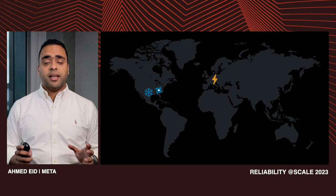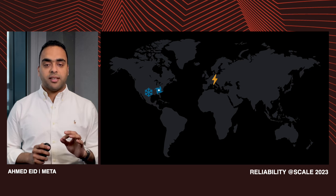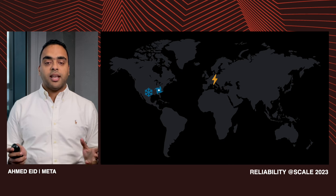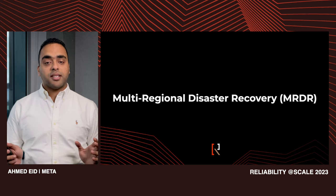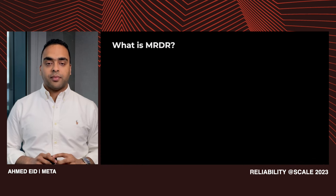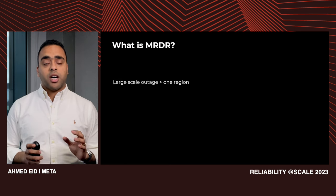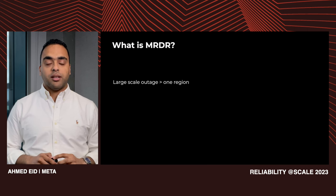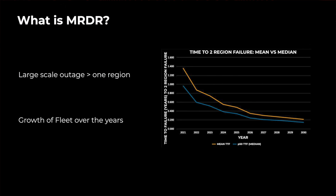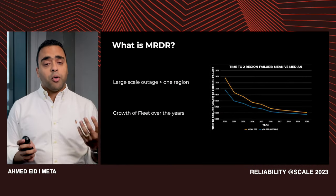What's common to all of this is that Meta was at risk of losing more than one region simultaneously — what we call multi-regional outages — and we started to work on a multi-regional disaster recovery program. Multi-regional outages are large-scale outages where more than one region is impacted. We will focus on MRDR events where two regions are impacted. As our infrastructure grows, the likelihood of multi-regional outages increases, and the mean and median time between two region failures is getting smaller — meaning we anticipate MRDR events to happen more often in the upcoming years.